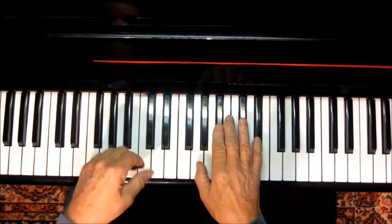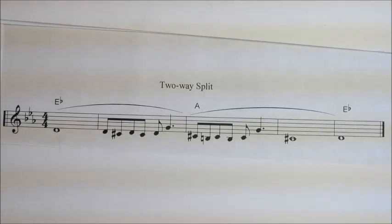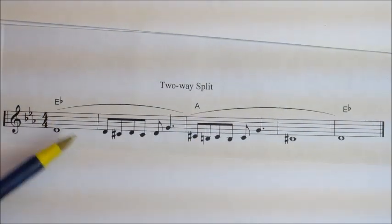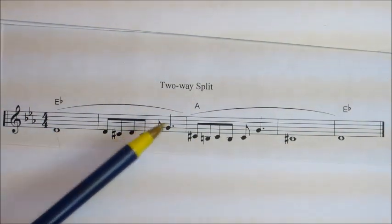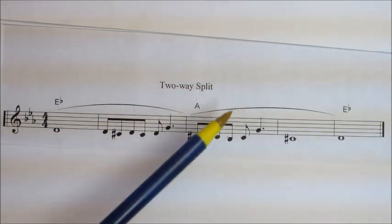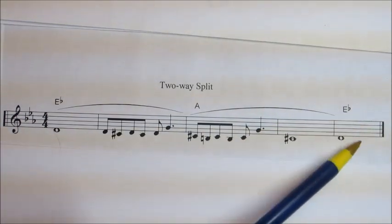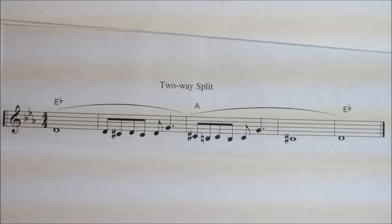But first, let's take a look at the music. Here is the opening few bars of 'One.' The first two bars are in E flat, and then we go down three whole tones — the distance of a tritone — to A for two bars, and then we return back to the original key, another tritone, back up to E flat again.